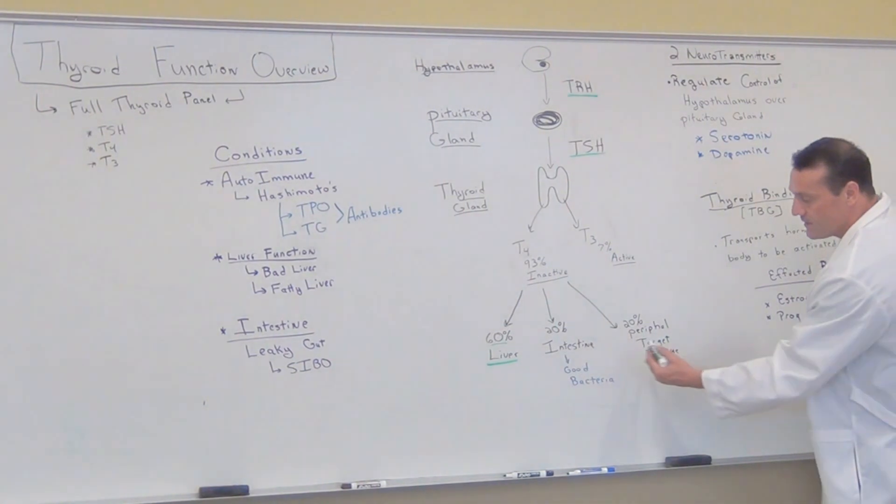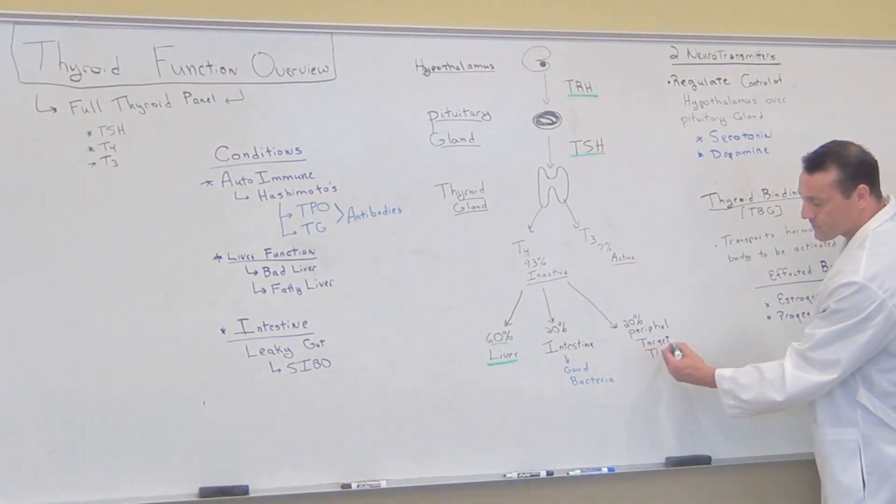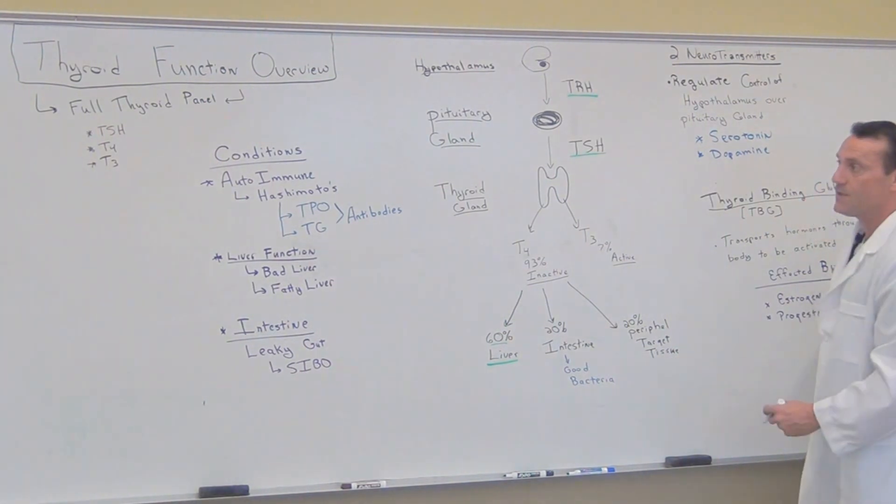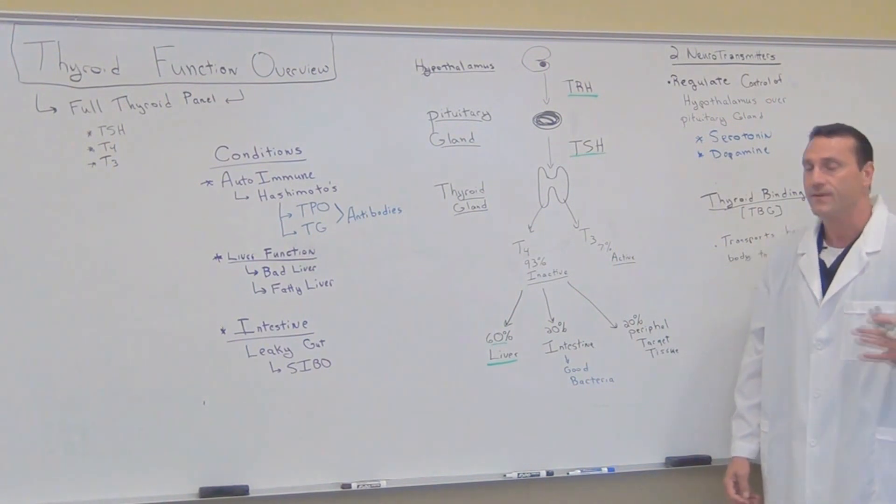Another, the last 20% is converted to active form T3 in the peripheral target tissue. So there's different areas that inactive form of T4 is converted to T3.